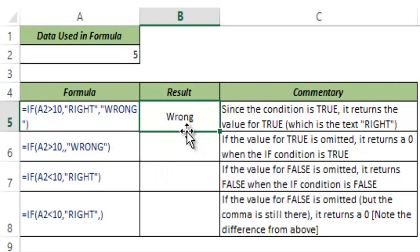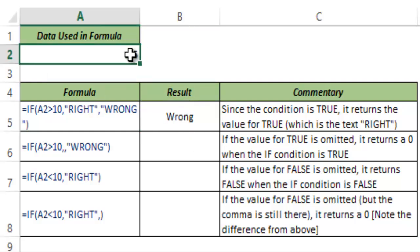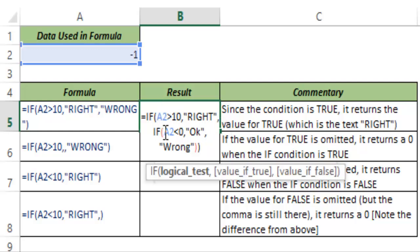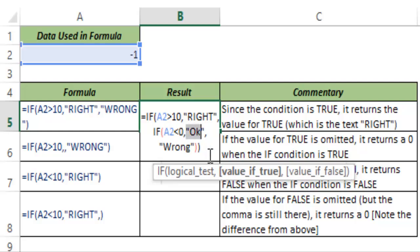In Excel you can use up to 64 IF conditions within one IF formula, so if your number of conditions exceeds 64 it would return an error. Let me demonstrate: I type minus 1 here and it returns 'OK' because it checks the first condition — that is false — then it checks the second condition which comes out to be true, and hence it returns 'OK'.